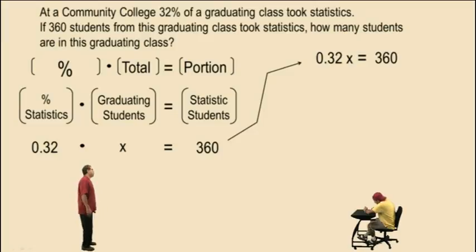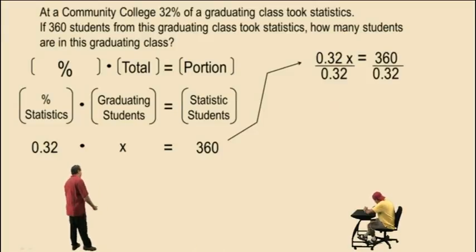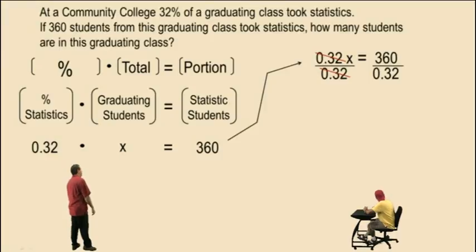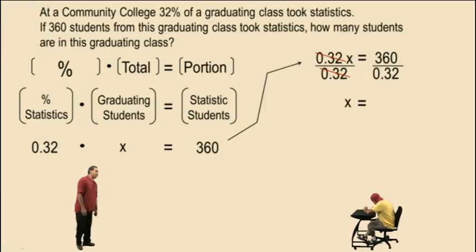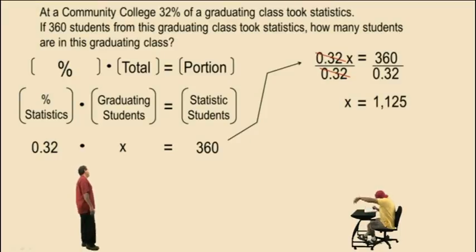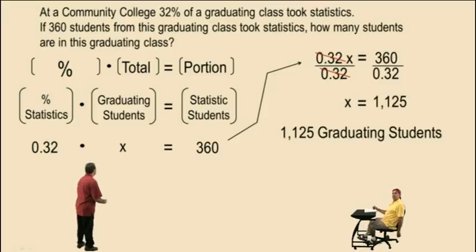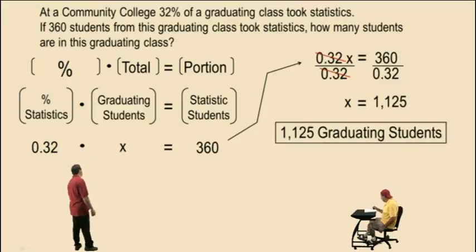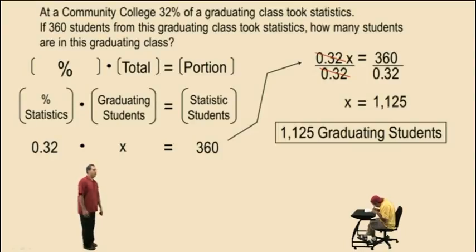To solve this equation, we divide both sides by 0.32 to get 1x, and we get x equals — Charlie, what did you get? 360 divided by 0.32. 1,125. Very nice, Charlie. So there are 1,125 graduating students. That answers the question.